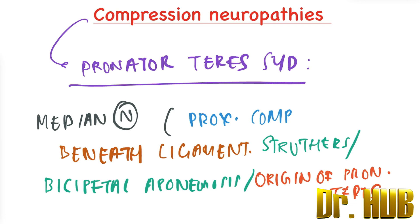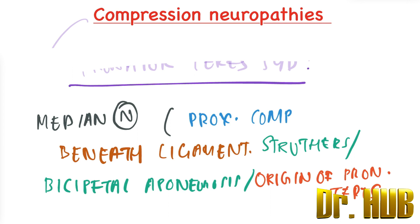The median nerve is proximally compressed beneath the ligament of Struthers, the bicipital aponeurosis, or the origins of the Pronator Teres.